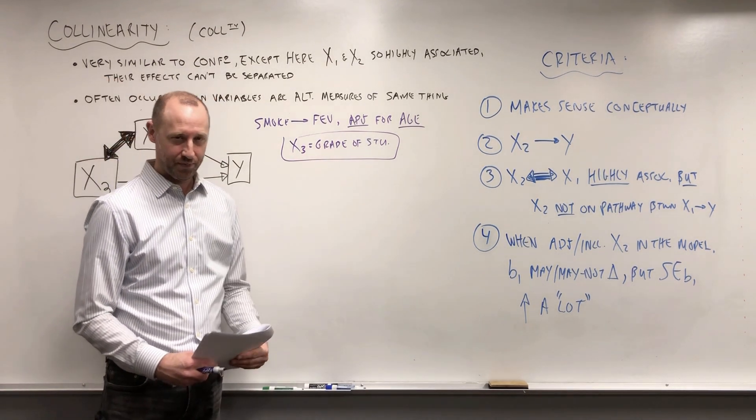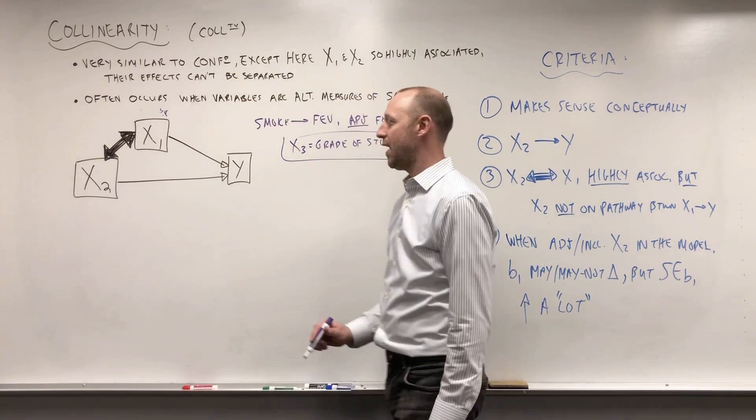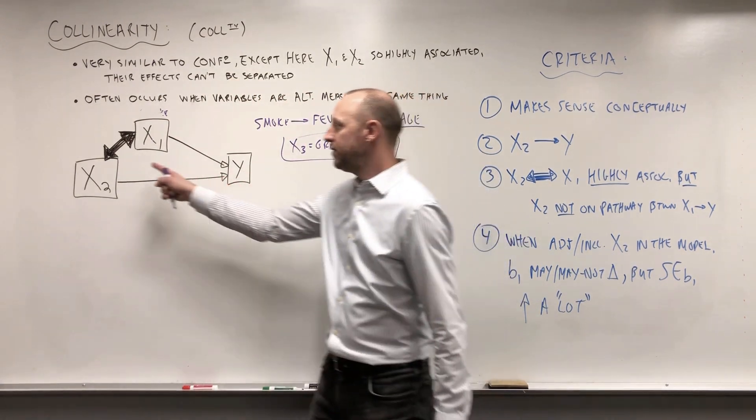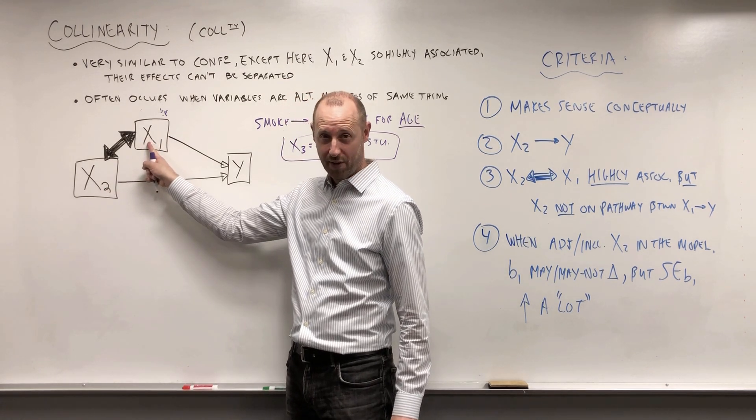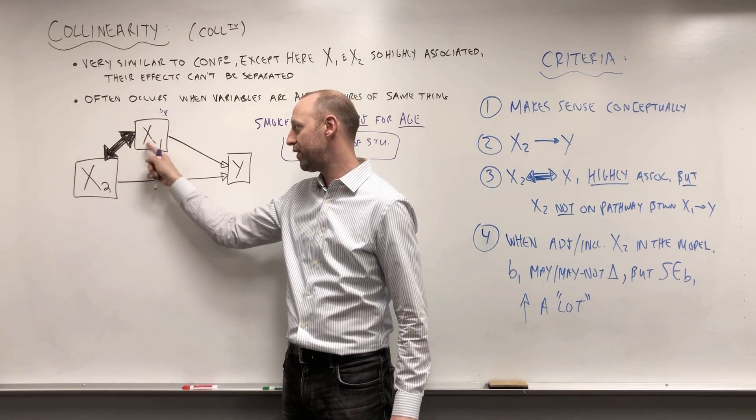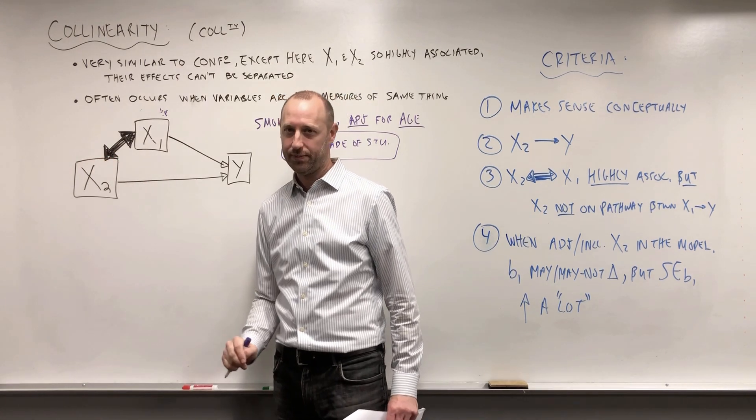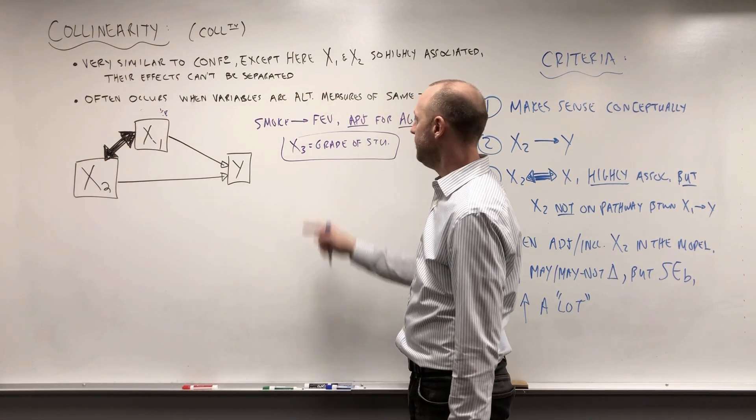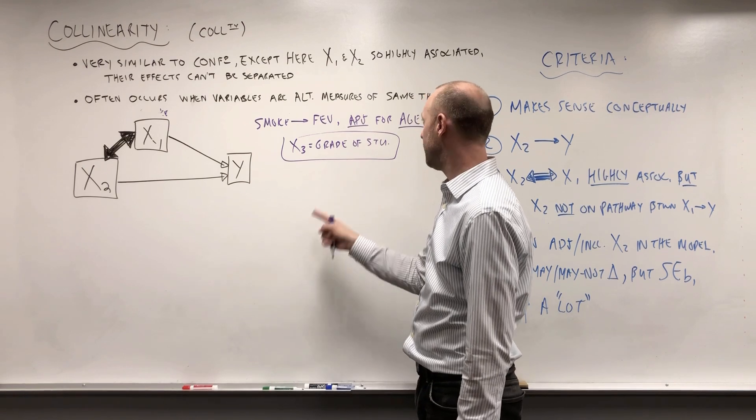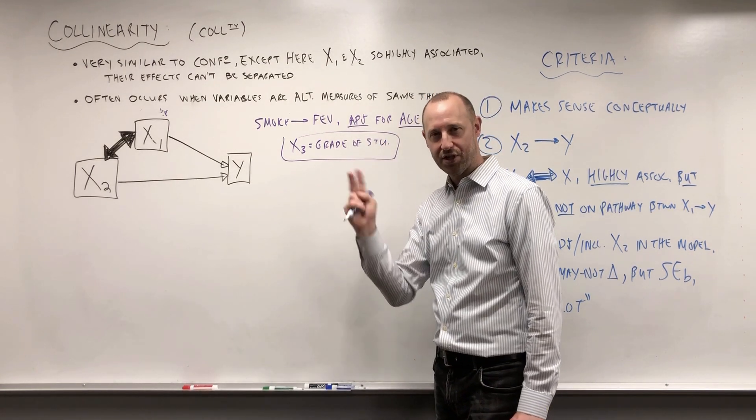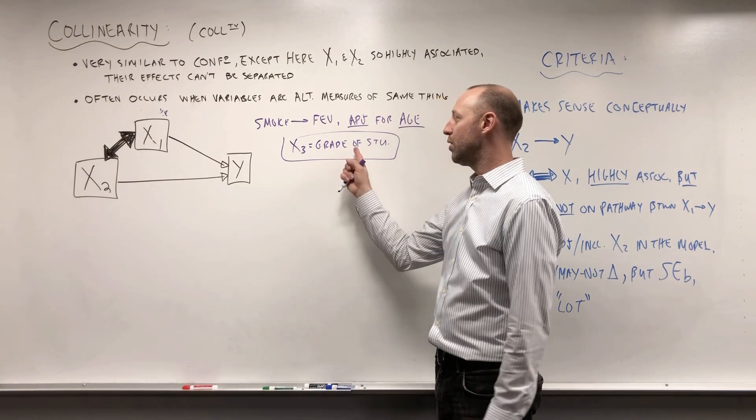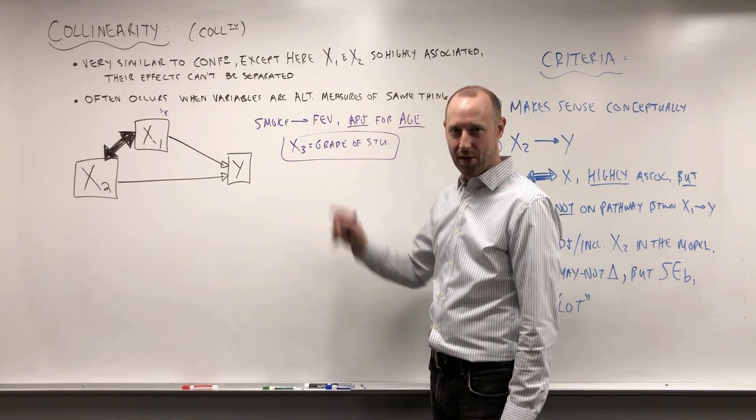Just to recap: if there's another variable X2 that's highly associated with X1, our variable of interest, if it's collinear we definitely want to exclude it. If there's some potential confounders—say age and grade of student—and those variables are essentially alternate measures of each other, we're going to want to adjust for only one of them, not both.